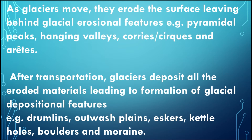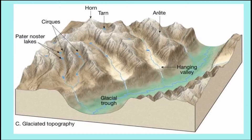So the glacier performs two processes: it erodes as it moves from up the slope retreating down the slope, and then later it deposits. So we have what we call glacial erosion features — pyramidal peaks, hanging valleys, cirques, and arêtes — and then glacial depositional features such as outwash plains, eskers, kettle holes, boulders, and moraines.